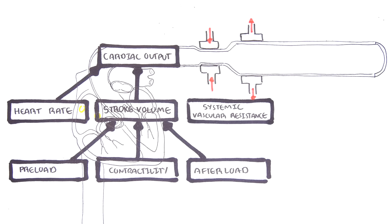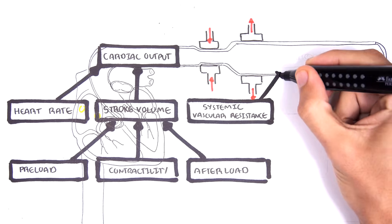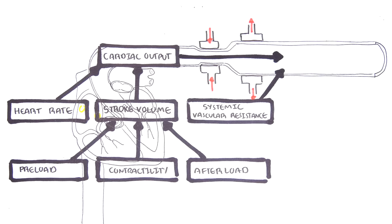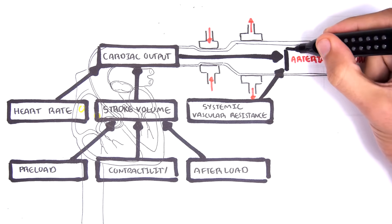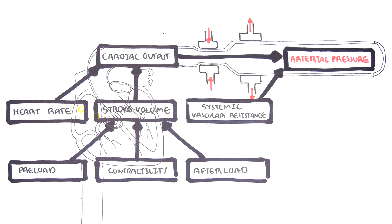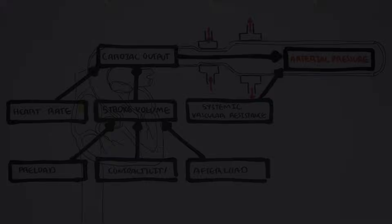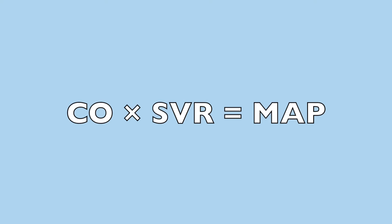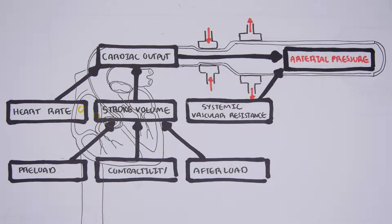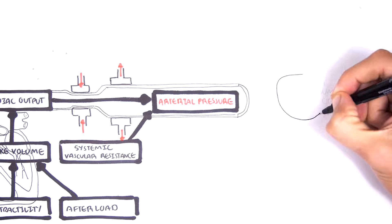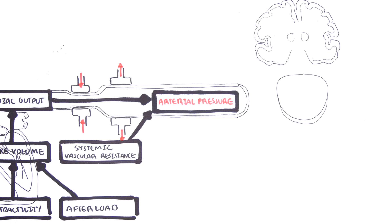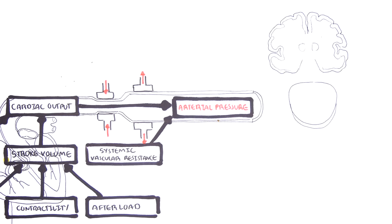Your cardiac output and your systemic vascular resistance can be used to calculate your arterial pressure. Cardiac output multiplied by systemic vascular resistance equals your mean arterial pressure. On a side note, your mean arterial pressure will therefore affect your afterload — if mean arterial pressure increases, it will increase your afterload.